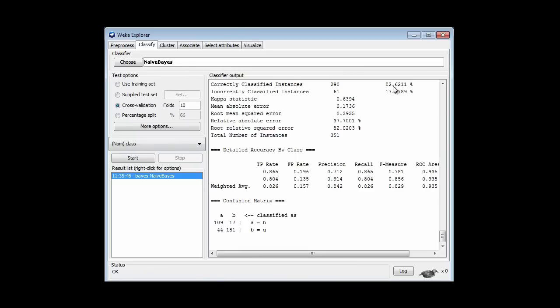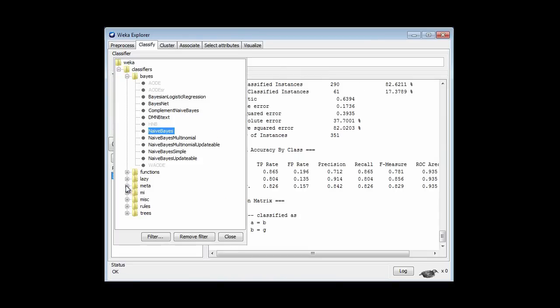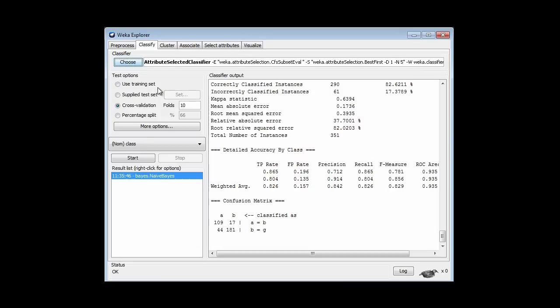Now, let's do attribute selection. Of course, we're going to use the Attribute Selected classifier to ensure that we're not cheating. That's a meta classifier. The Attribute Selected classifier.